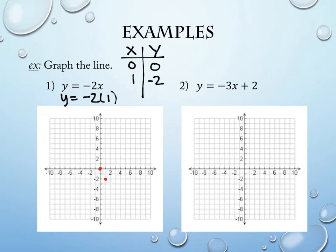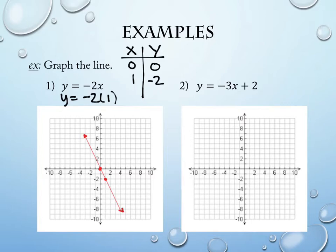If you have a straight edge — a folder, a calculator lid, your ID card, even the edge of a paper — it will help you keep things nice and neat. There's really no excuse not to make it nice and neat, so I expect that you will. We're going to connect these two points, and you should really draw arrows on the ends because the line would continue in both directions indefinitely.